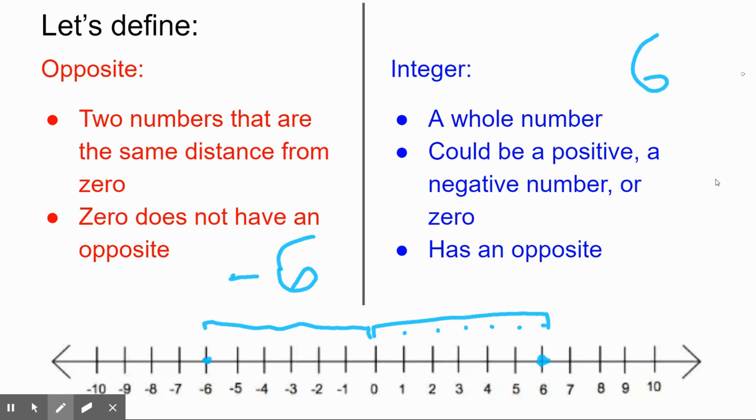Does that mean any opposite will be either negative or positive, depending on your original number? Yes, that's exactly what it means. Nothing too bad - just make sure they're the same distance from zero.